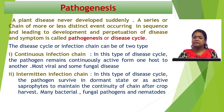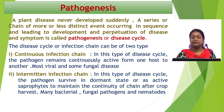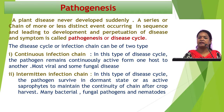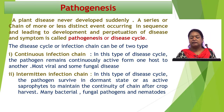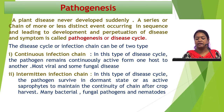The disease cycle or infection chain is of two types. The first one is continuous infection chain. In this type of disease cycle, the pathogen remains continuously active from one host to another, and most viruses and some fungal diseases come under the continuous infection chain or continuous disease cycle.